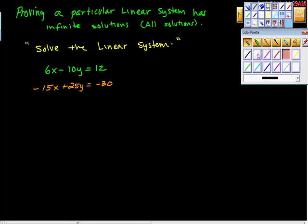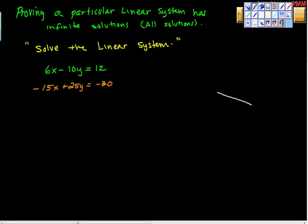We need to be reminded again that here are the possibilities. When we're solving linear systems, the question we're asking is how many times do our two lines touch? So it's possible our two lines have the same slope but different y-intercepts. If these lines look like they're ever going to meet — they're meant to be parallel — and in this case there are no solutions.